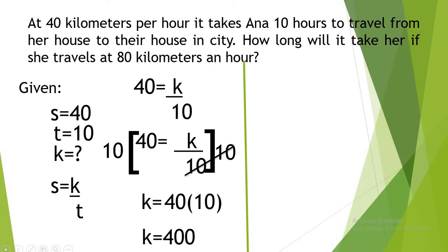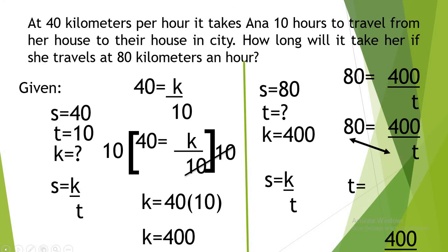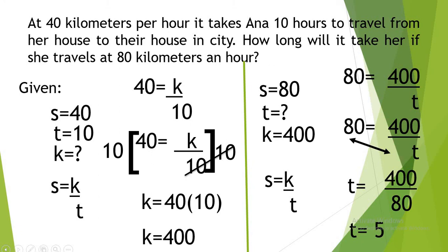Since the distance K is 400, we now find the time T when S is 80. Using S is equal to K over T, we substitute: 80 is equal to 400 over T. Interchanging T and 80, we get T is equal to 400 over 80, which simplifies to 5. So if she drives at 40 km/h it takes 10 hours, but if she drives at 80 km/h it takes only 5 hours.